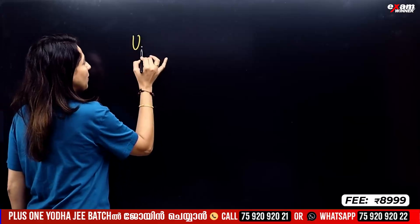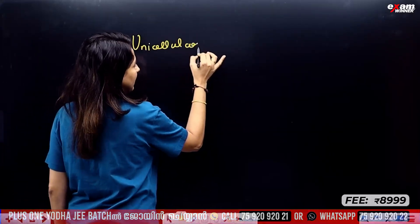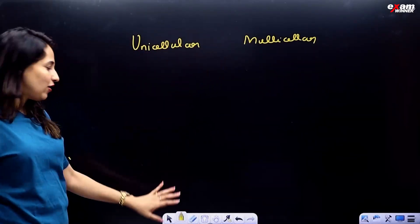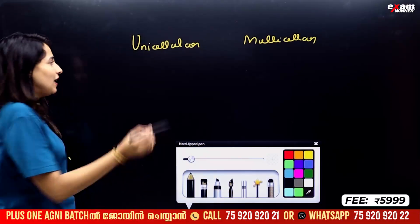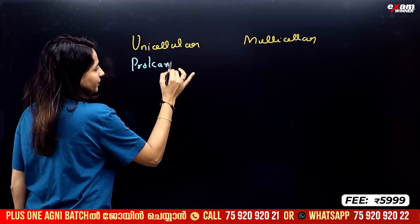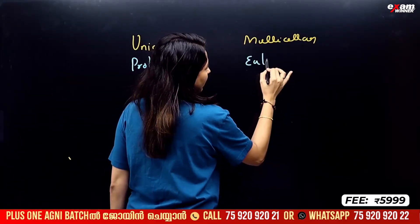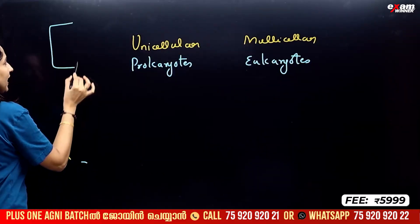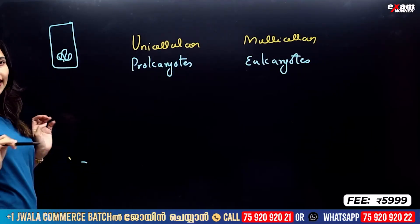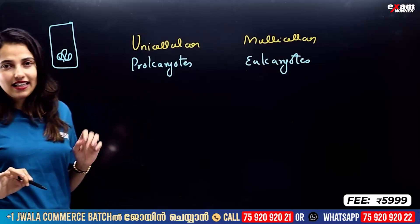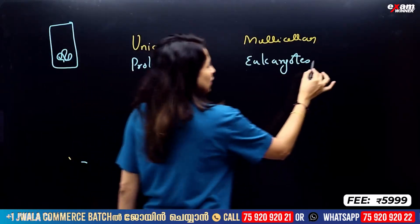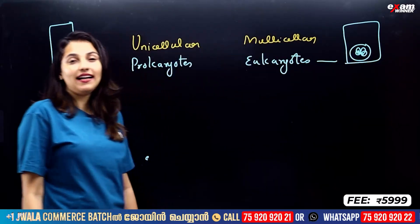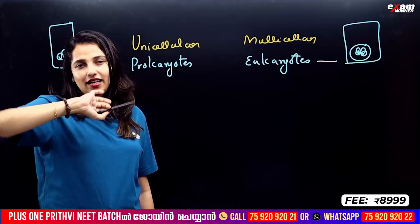So unicellular and multicellular organisms are separate. Unicellular organisms and multicellular organisms are divided. Prokaryotes and eukaryotes — a cell, a genetic material, a covering. Prokaryotes versus eukaryotes: the difference is the genetic material has a nuclear envelope — a nuclear membrane. Eukaryotes have a nuclear membrane.